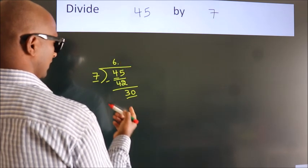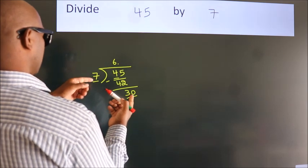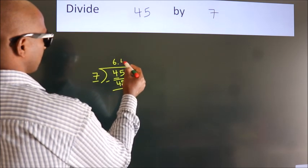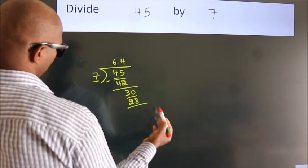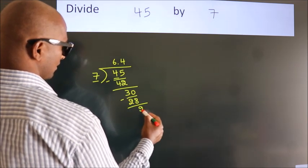So 30. A number close to 30 in 7 table is 7 times 4, 28. Now we subtract. We get 2.